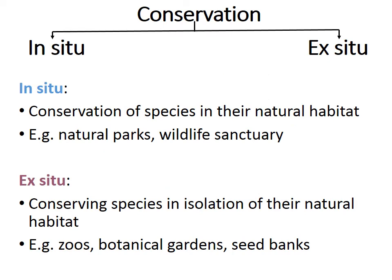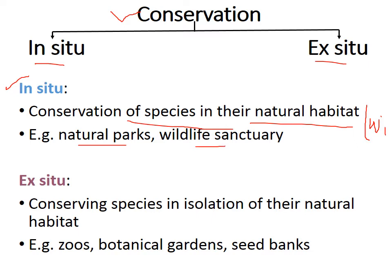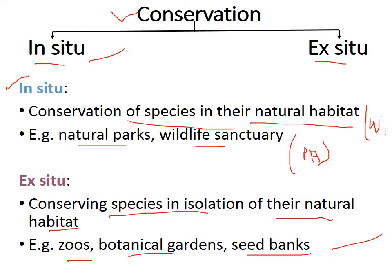The tools of conservation are of two types: in-situ conservation and ex-situ conservation. In-situ conservation means conserving species in their natural or wild habitat — for example, national parks, wildlife sanctuaries, and other protected areas. Ex-situ conservation means conserving species in isolation from their natural habitat — for example, zoos, botanical gardens, gene banks, and seed banks.